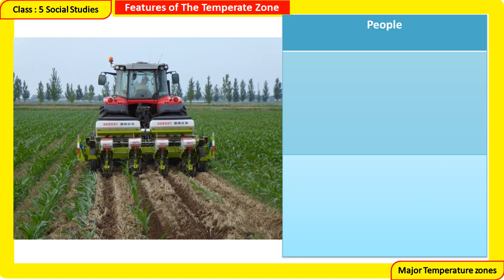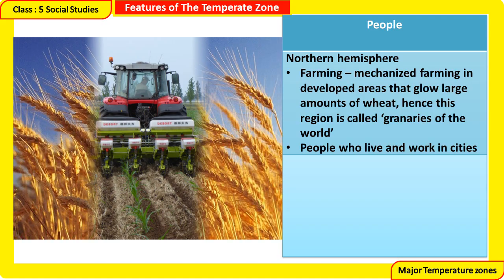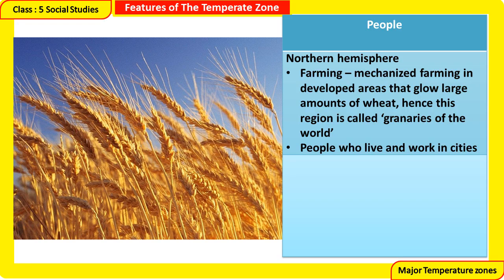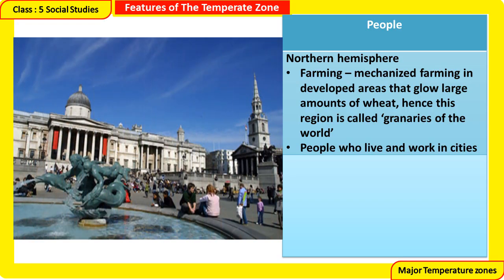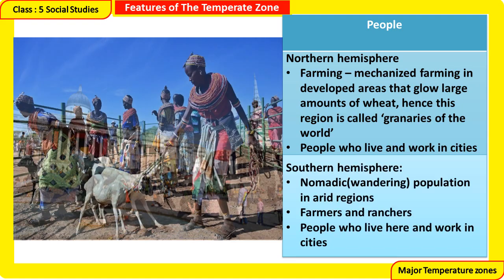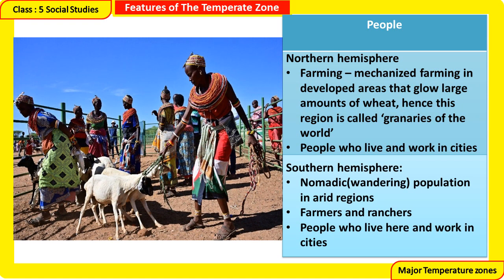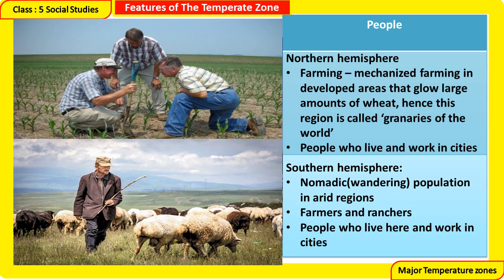People of the Temperate Zone — Northern Hemisphere: farming is the chief activity, with mechanized farming in developed areas growing large amounts of wheat, hence this region is called the granaries of the world. People also live and work in cities. Southern Hemisphere: nomadic wandering populations in arid regions, along with farmers, ranchers, and people who live and work in cities.